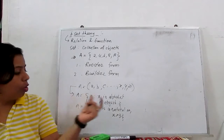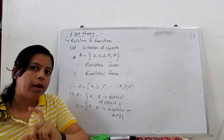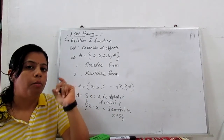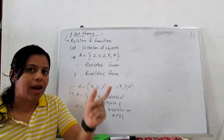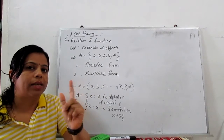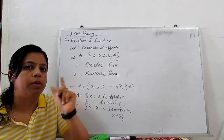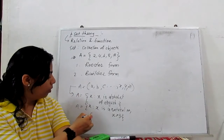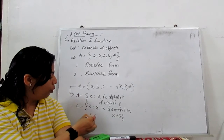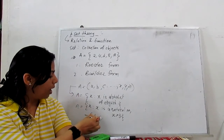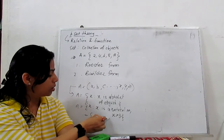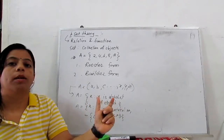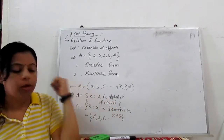So it means in this set, all the natural numbers come but starting from greater than 3. It means this set starts from 4, 5, 6 and all the natural numbers. So this is called builder form.